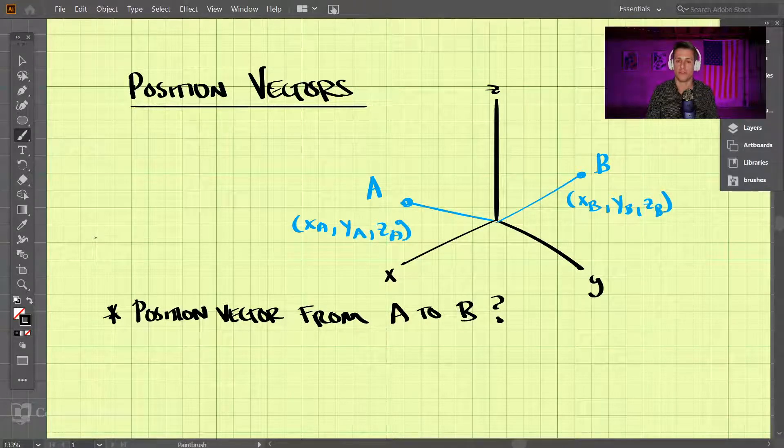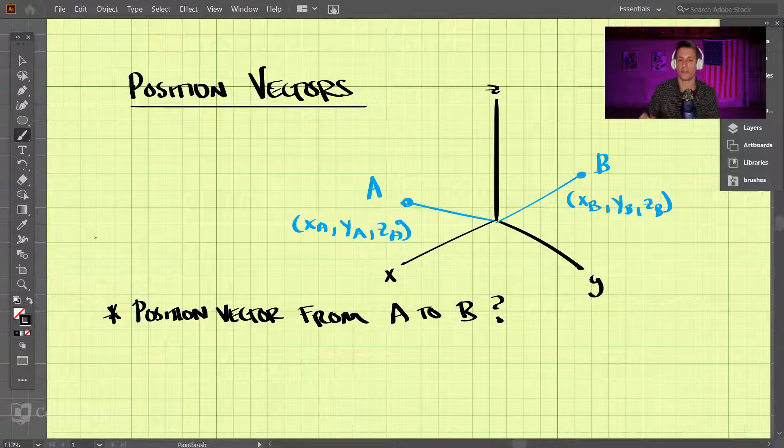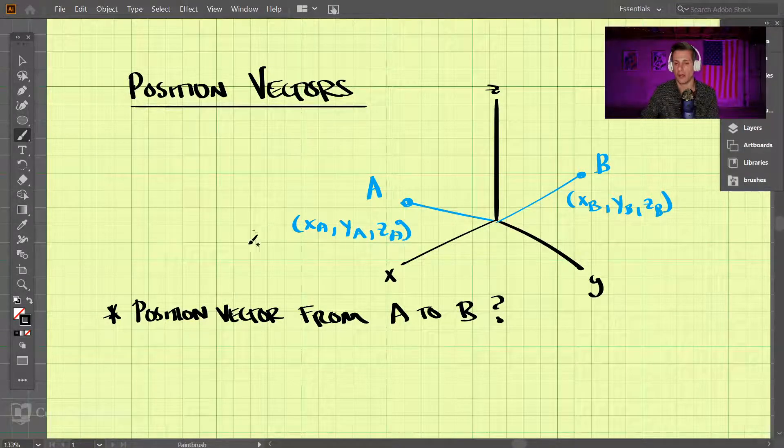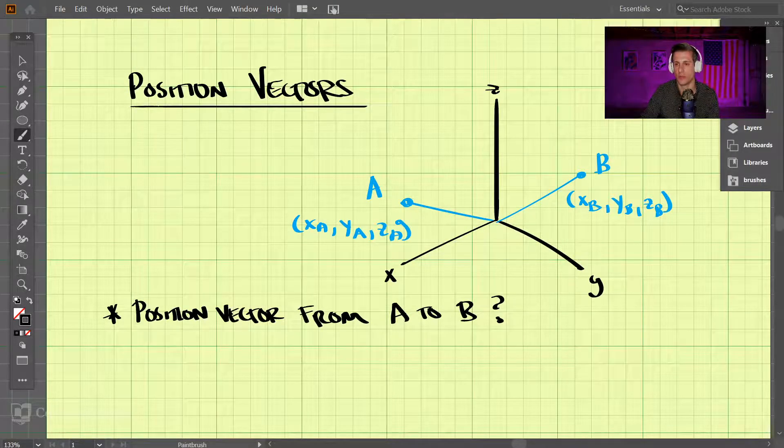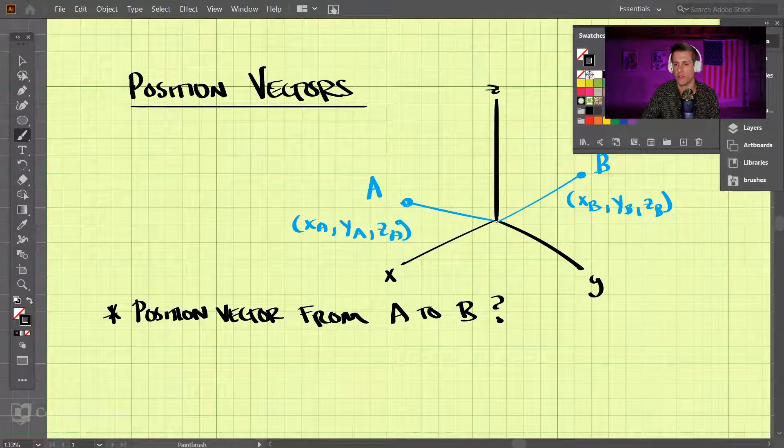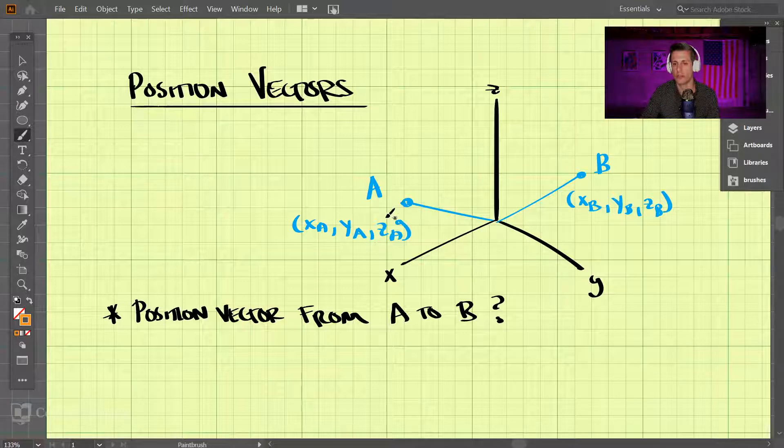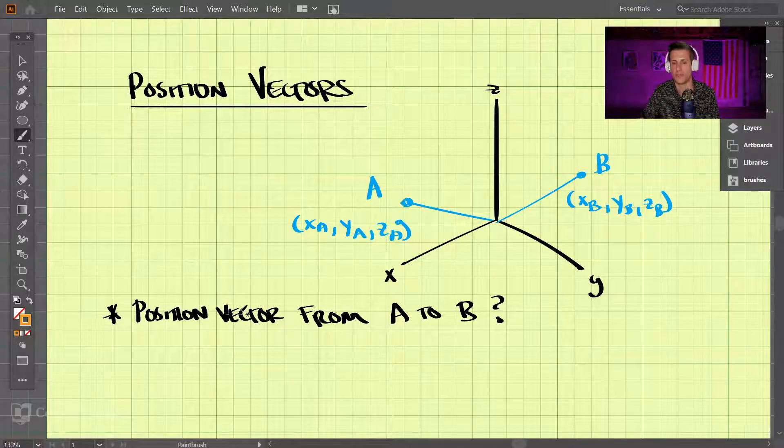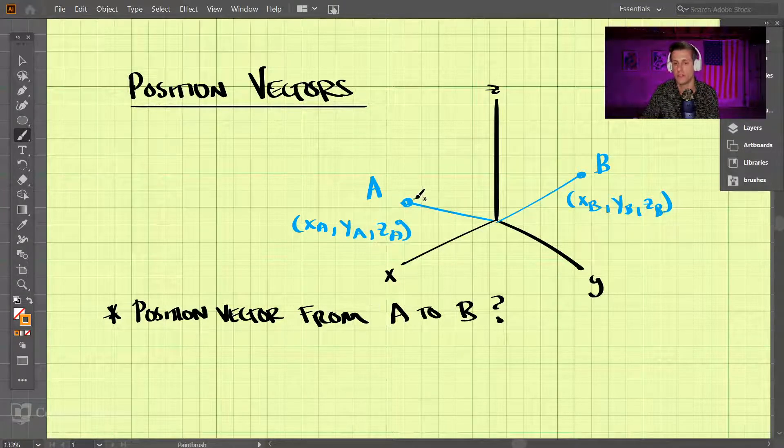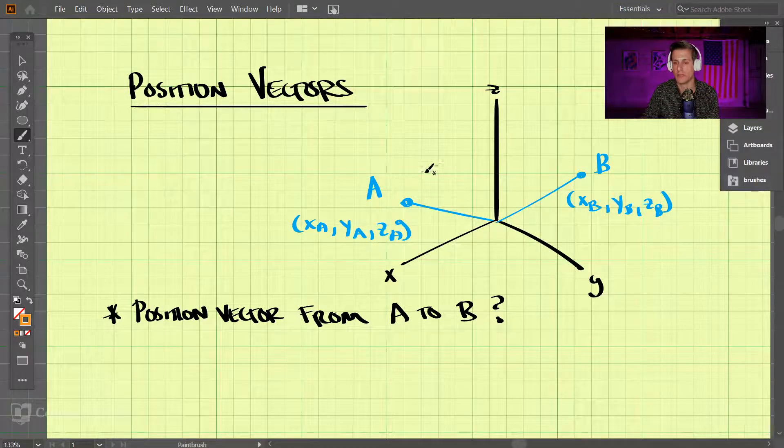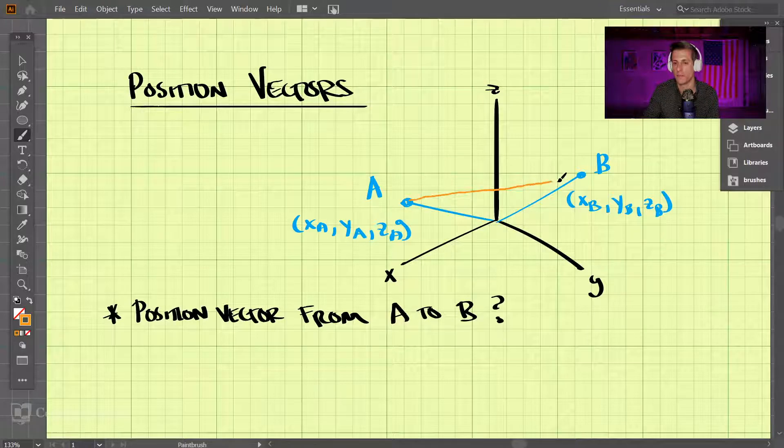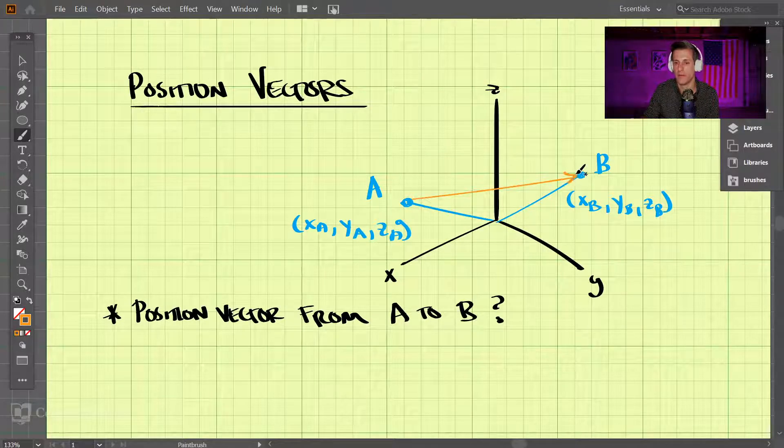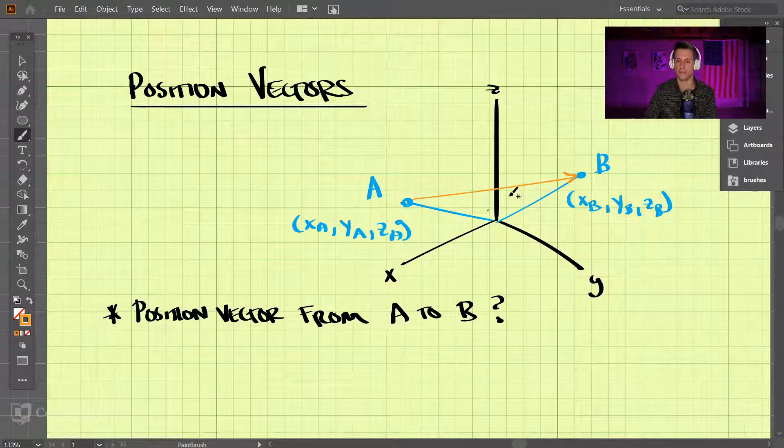So let's talk about position vectors. A position vector, you know, we're given two points here and a position vector would be a vector between two points. So let's say we're trying to find a position vector from A to B here. So what is the position vector from A to B and we're given this 3D coordinate system? Well, A to B is this vector right here.